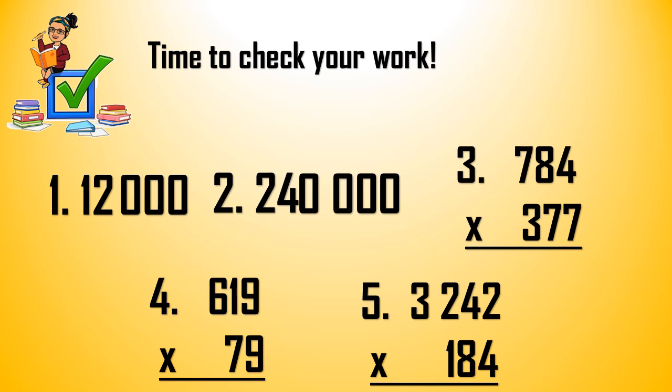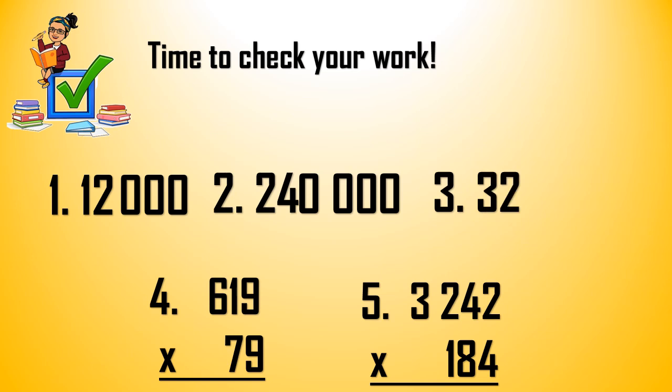How about number 3? Number 3 will become 800 times 400. So multiply 8 and 4. 8 times 4 is 32. And how many zeros? There are 4 zeros. So the answer is 320,000. If your answer for number 3 is 320,000, check for number 3.